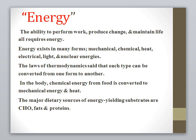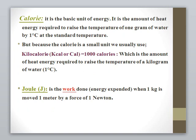The major dietary sources are carbohydrate, fat, and protein. What is a calorie? It is a basic unit of energy — the amount of heat or energy required to raise the temperature of one gram of water by one degree centigrade at a standard temperature. Because calorie is a very small unit, we substitute it with kilocalories, which equals to one thousand calories. By definition, a kilocalorie is the amount of heat energy required to raise the temperature of a kilogram of water by one degree centigrade.